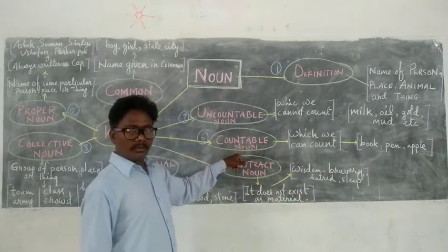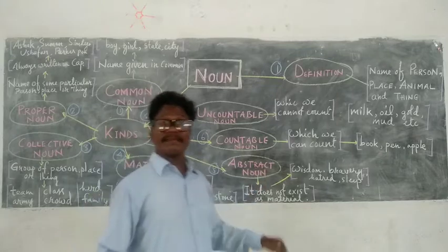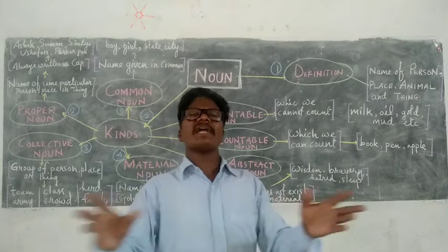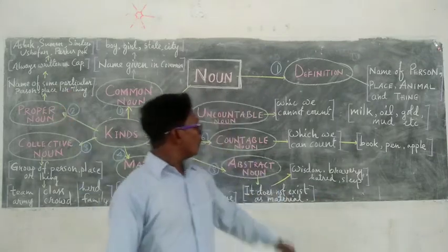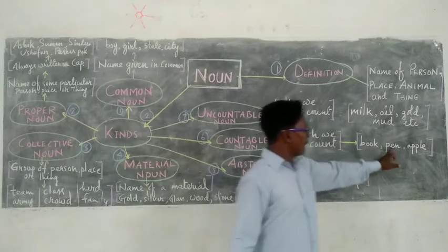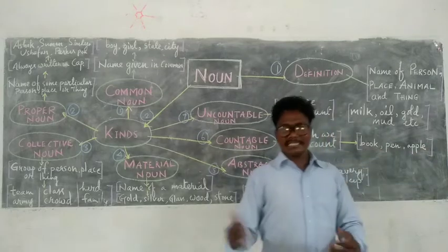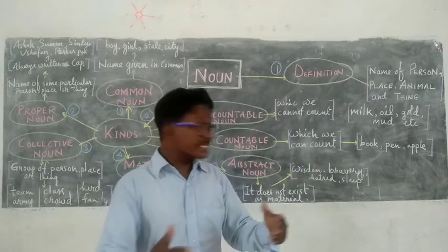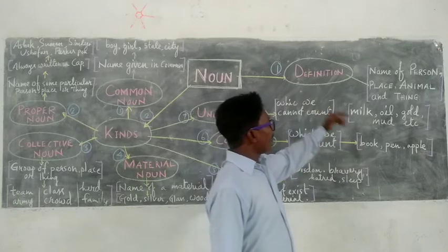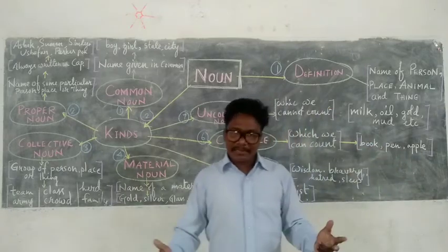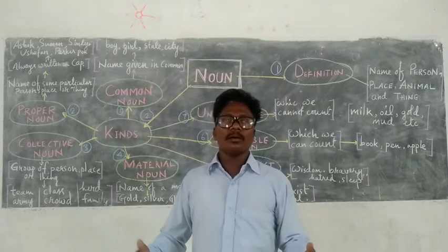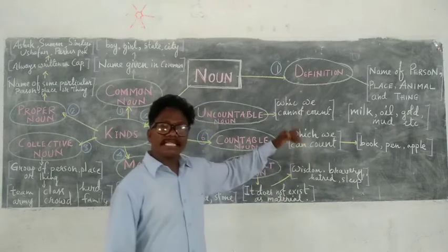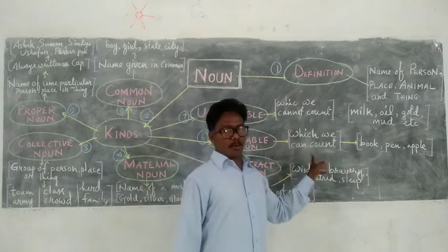Sixth: Countable Noun. What is a countable noun? It is very simple — which you can count: one, two, three, four, five, etc. Examples: Book, Pen, Apple, Chair, Bench, Chalk, etc. You can say I have five books, I have two pens, I have three apples, we have ten chairs. So which you can count is a countable noun.